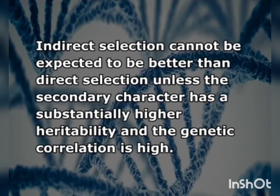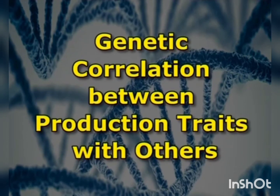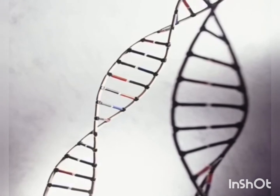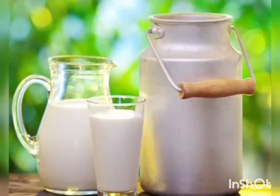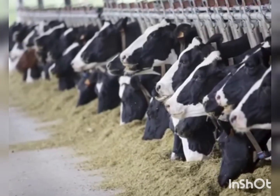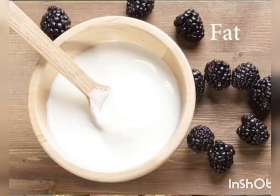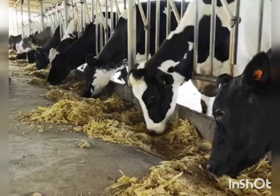Indirect selection applied to a character other than the one desired cannot be expected to be better than direct selection unless the secondary character has substantially higher heritability and the genetic correlation is high. Regarding genetic correlation between production traits, there is an abundance of published evidence on genetic correlations of milk production traits in cattle breeding. The main focus of dairy selection has been on increasing milk yield. Milk, fat, and protein yields are the biologically and economically most interesting traits in dairy cattle. Different researchers have shown that genetic correlations among yield traits were strongly positive, ranging from 0.49 to 0.92, with the highest between milk and protein production, ranging from 0.83 to 0.92.